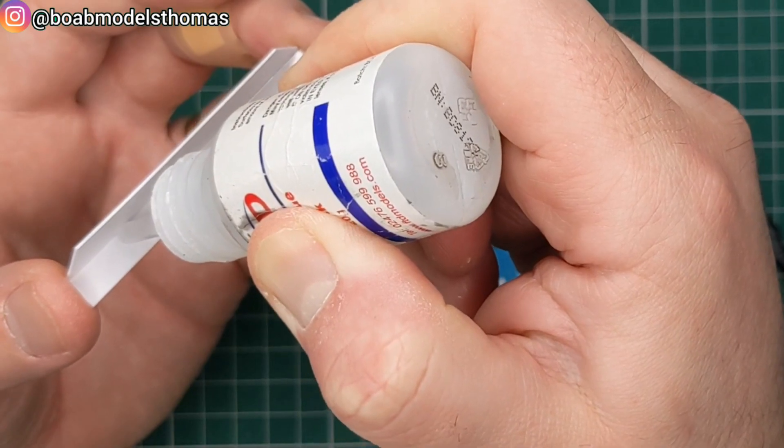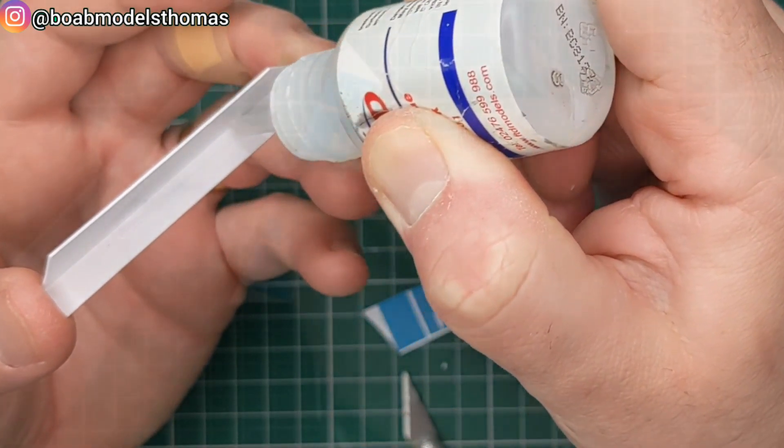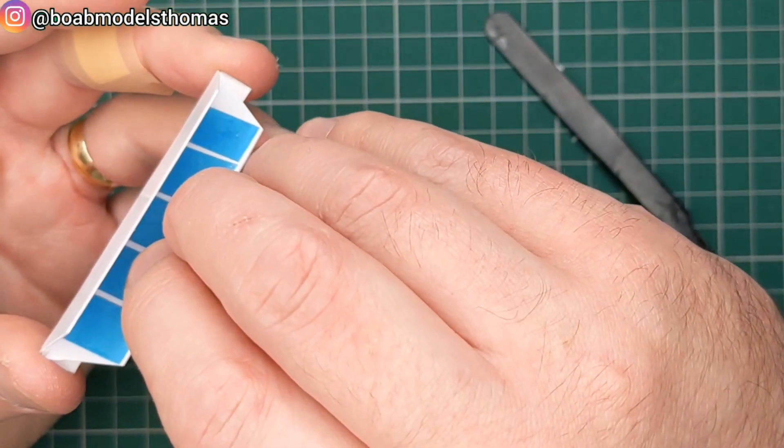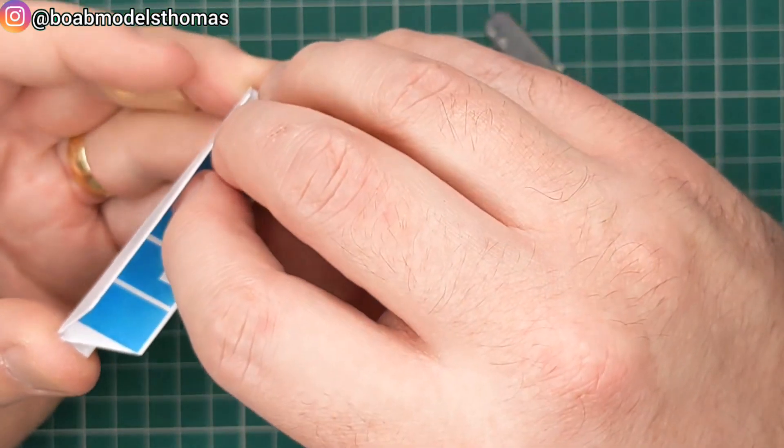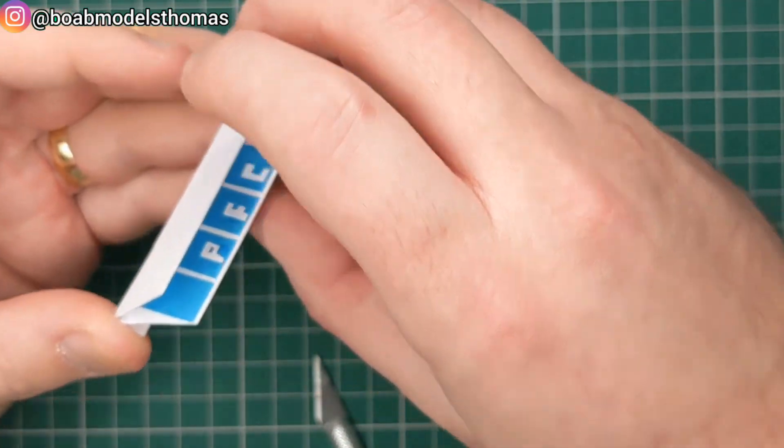And then some foam-safe superglue here for the back of the stand like so. And then you've got a moment before it cures to position it into the correct shape.